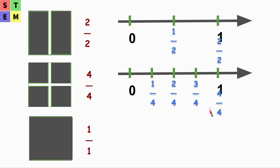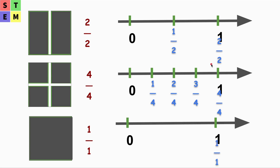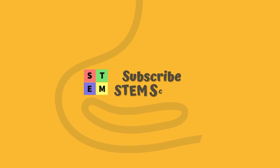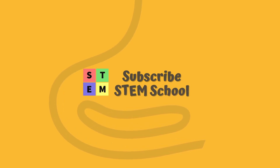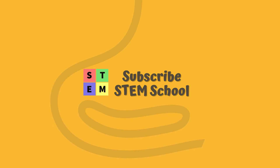In our last example we haven't divided the object into any equal parts, so on this number line there is nothing in between zero and one. That's why it's just one, written as one over one, which equals one. That's everything for today's lesson — please click like if you like this video and subscribe to my channel. Thank you.